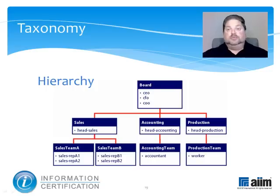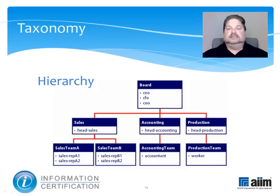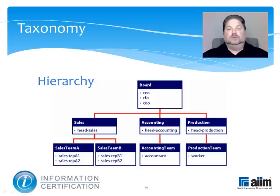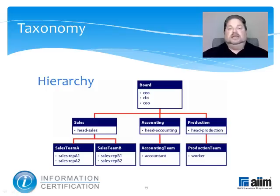Hierarchies are more formal and less flexible than trees in that elements can appear in only one place. Examples include military rankings and org charts. Polyhierarchies are used when an item belongs in more than one place in the real world, and multiple organizing principles are required. This provides virtual linking between hierarchies.